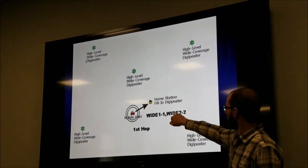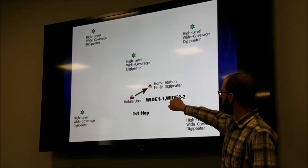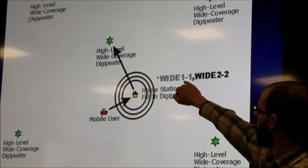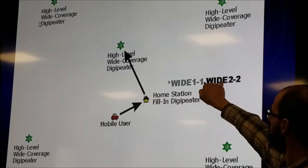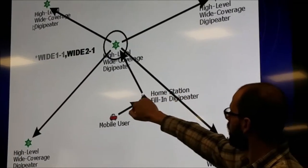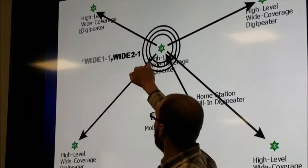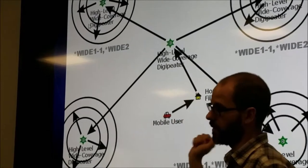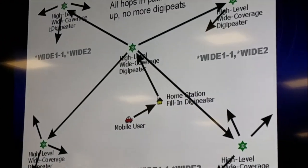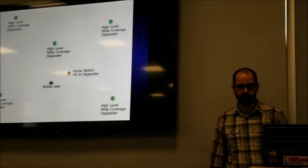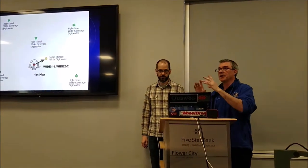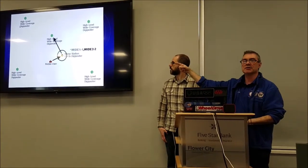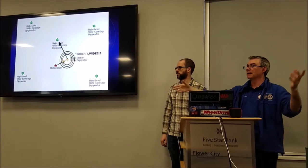On the message you'll see it starts out Wide 1-1 and Wide 2-2. The 1-1 will hop once, so your Wide 1-1 disappears and you're still on Wide 2-2 to get to a high-level digipeater. We then decrement to 2-1, and when we get to the wide-area coverage it'll just be Wide 2, which means do not repeat this signal anymore. Unlike voice repeaters, the digital repeaters know they've received a repeated signal, so they keep track of the number of hops and stop repeating at two hops. You set that in your tracker.